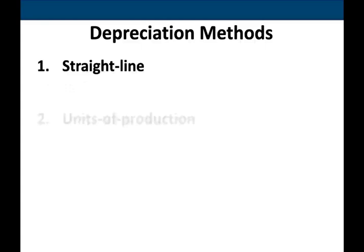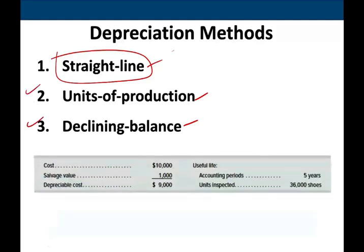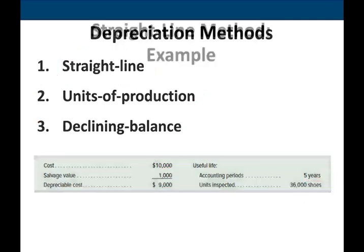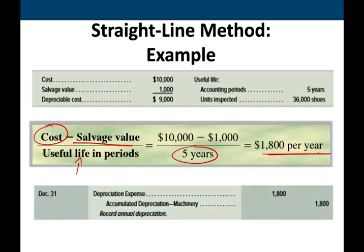In the prior session, we looked at the 3 depreciation methods that we used, which is the straight line, units of production, and the double declining balance. The only partial year I'm going to illustrate is the straight line. Whatever applies to the straight line applies to the other two methods as well, so the rules are the same. We looked at an asset with a cost of $10,000, salvage value of $1,000, depreciable cost of $9,000, a five-year asset. Under the straight line method, to compute depreciation, we take cost minus salvage value divided by useful life for a full year, and the amount will be $1,800 — debit depreciation expense, credit accumulated depreciation.